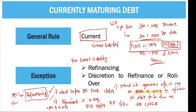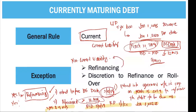So the general rule is: currently maturing long-term debt is a current liability. But if there is a valid refinancing — entered before balance sheet date and refinanced for more than 12 months — it becomes a non-current liability.